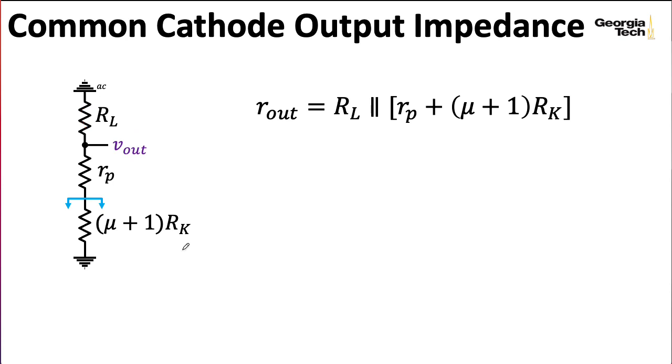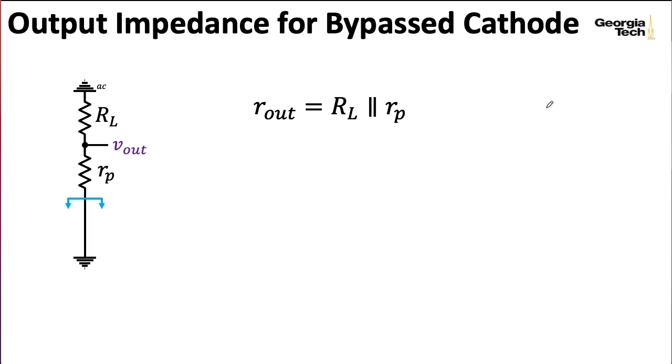Now, if we leave out this RK, so we don't have any cathode degeneration, well, that simplifies things a lot. We can get rid of this term. And then the output impedance is just RL in parallel with little RP. Okay, so what do these formulas look like when we actually plug in the various values for the Mesa Boogie dual rectifier?